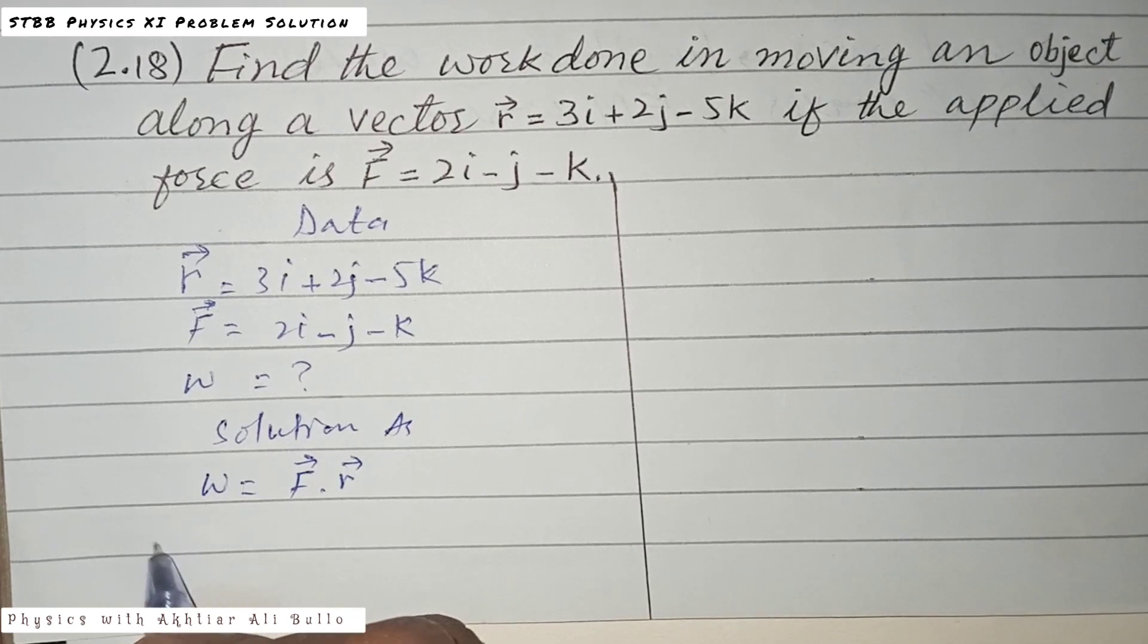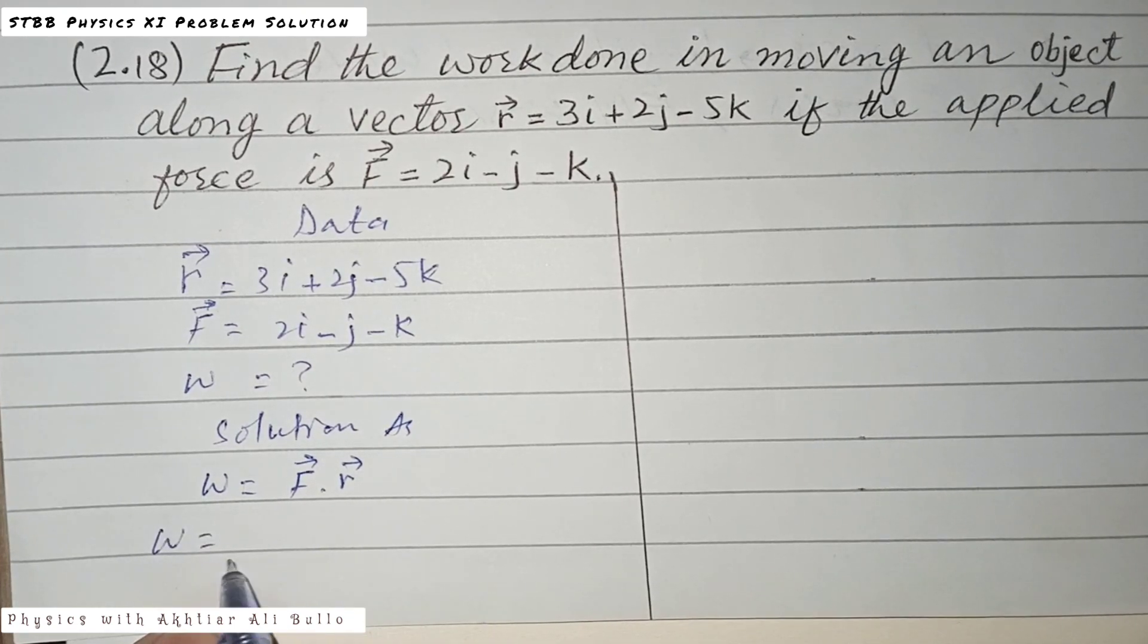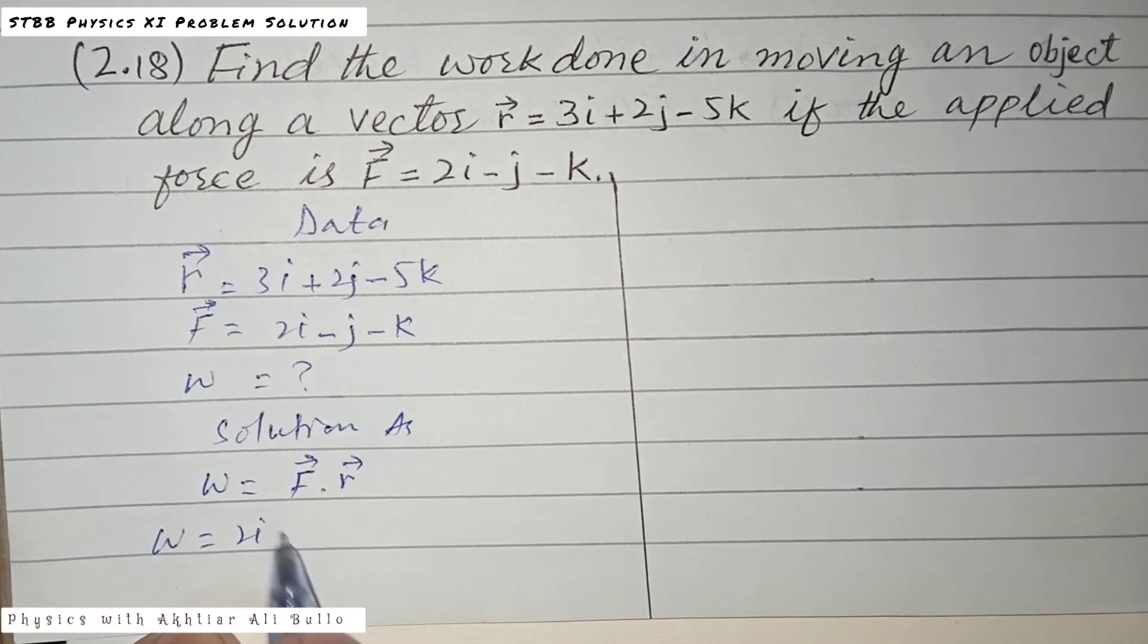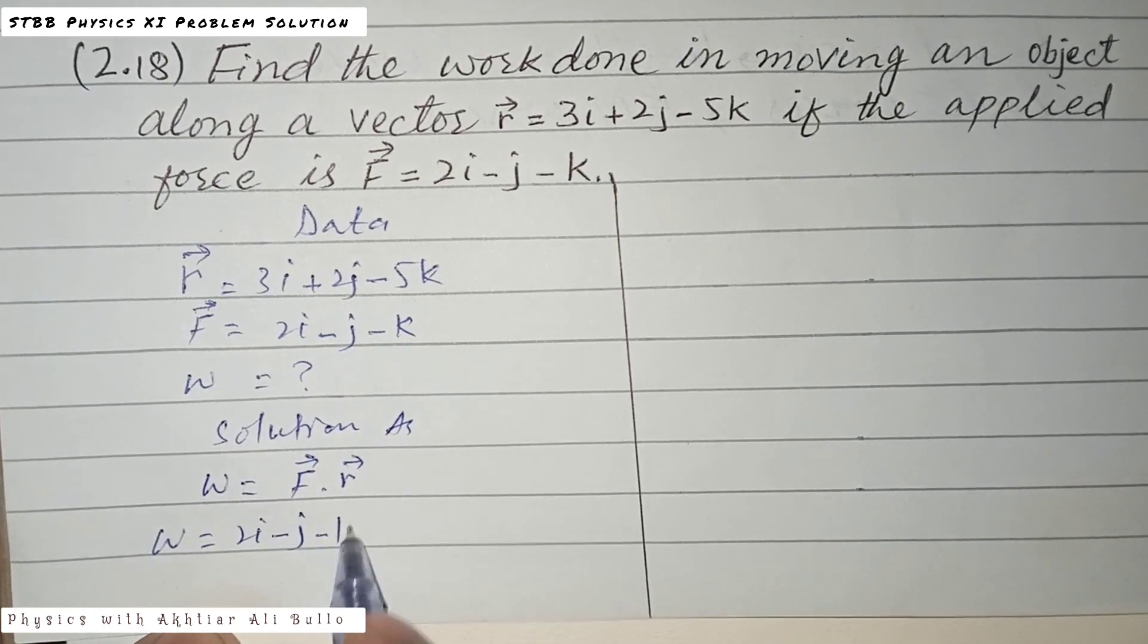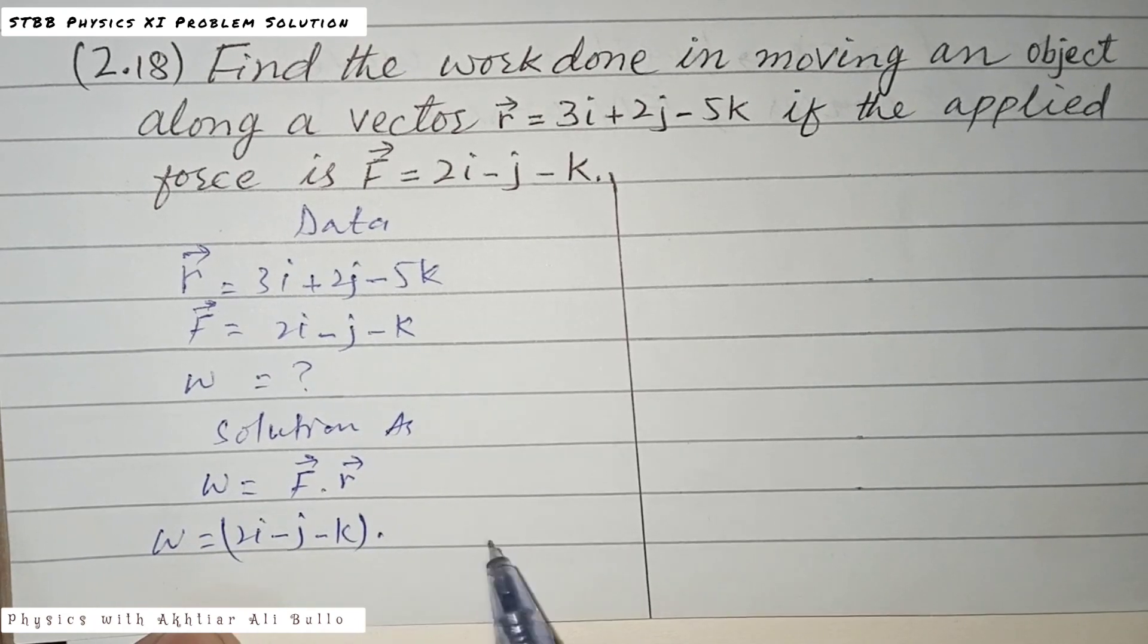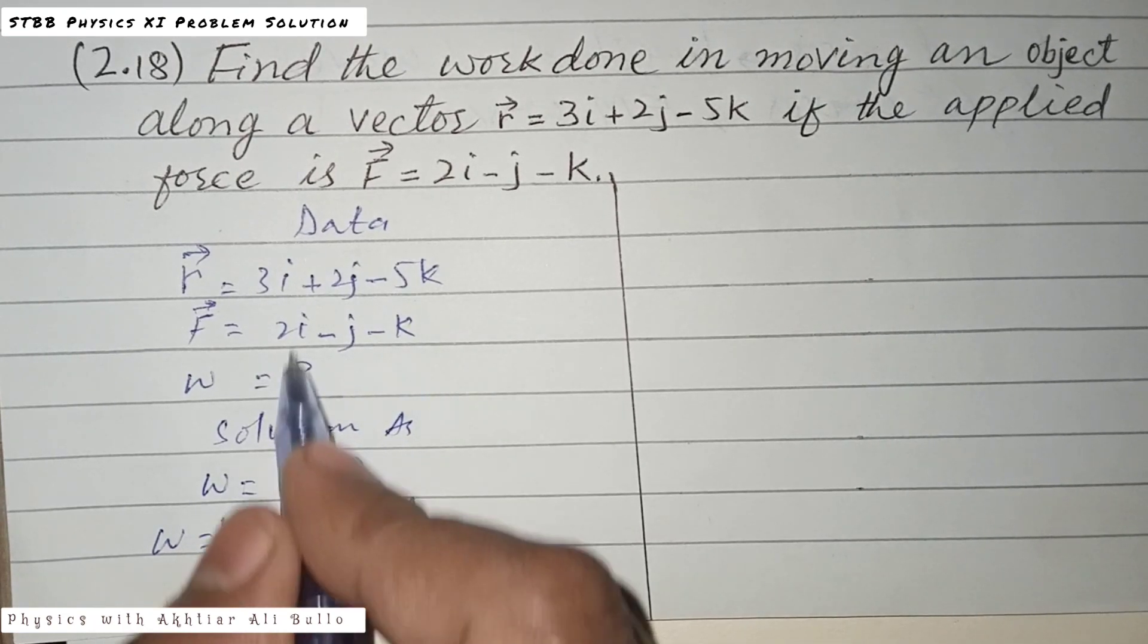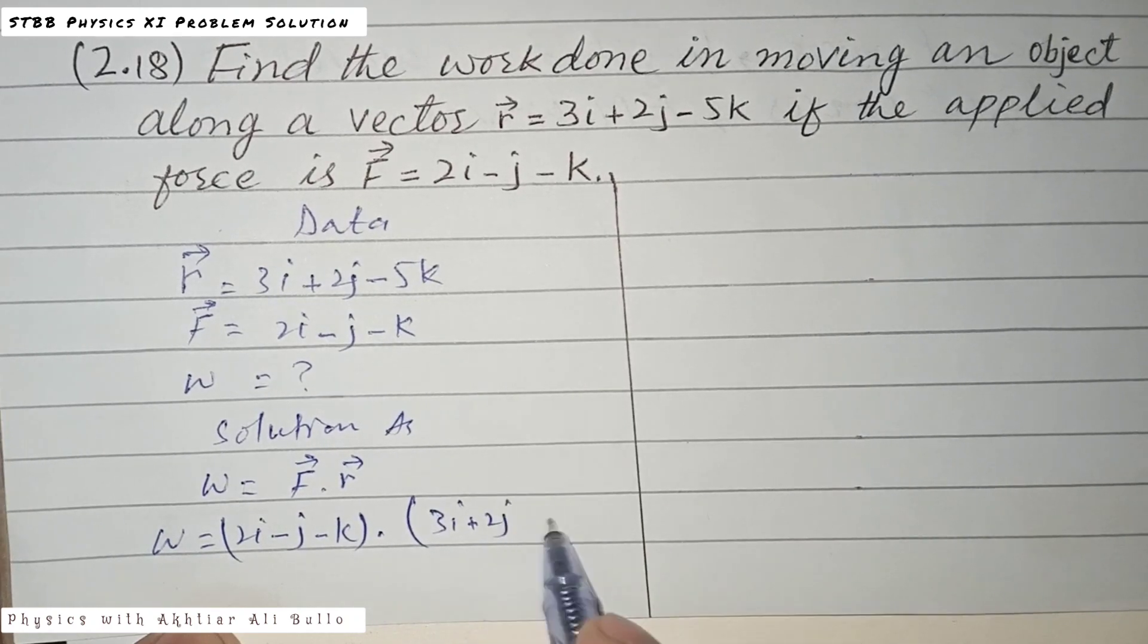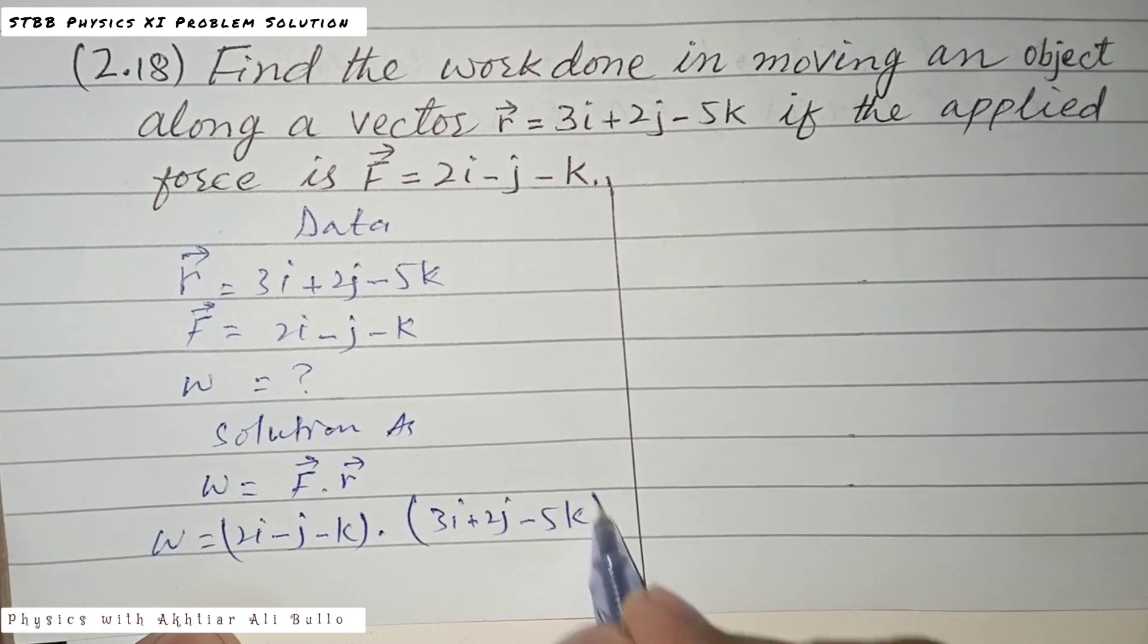By putting the values, work done will equal the force 2i minus j minus k dot the displacement 3i plus 2j minus 5k.